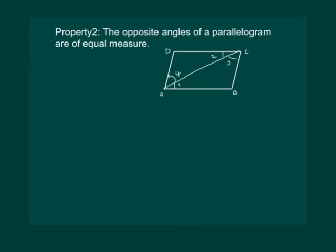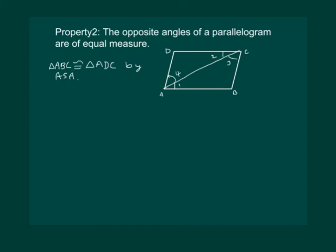To prove this, recall that while proving Property 1 we showed that triangle ABC and triangle ADC were congruent, because angle 1 equals angle 2 and angle 3 equals angle 4 (alternate angles), and AC equals AC. Congruency means the two triangles completely overlap each other, so if triangle ABC and ADC are congruent, then angle B will be equal to angle D.